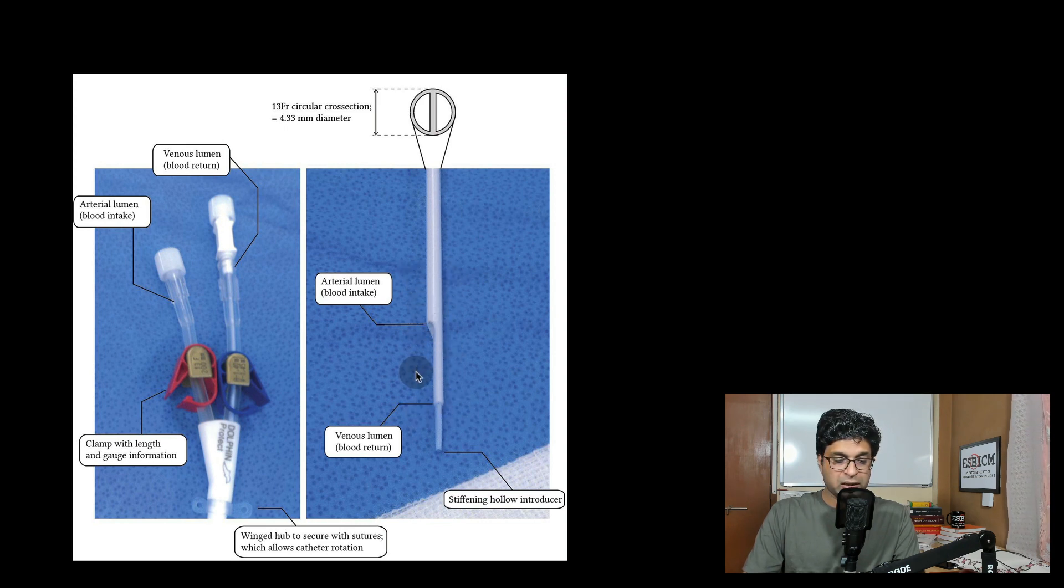So imagine this catheter is in your vessel and the red port sucks the blood. The blood gets sucked from here, it goes through the dialysis machine, gets filtered, comes out not from here but from distally through this blood lumen.